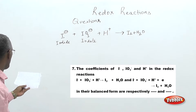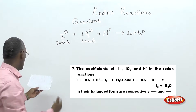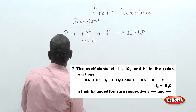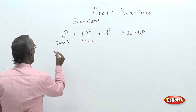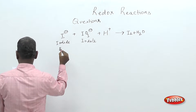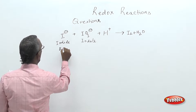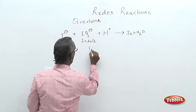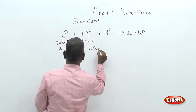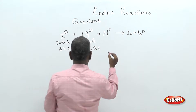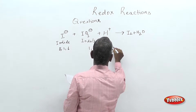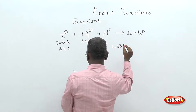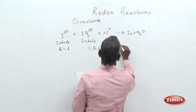We have to identify the coefficients, and there are different choices given: 5, 1, 6 — then 1, 5, 6 — then 6, 1, 5 — and 6, 1, 5.